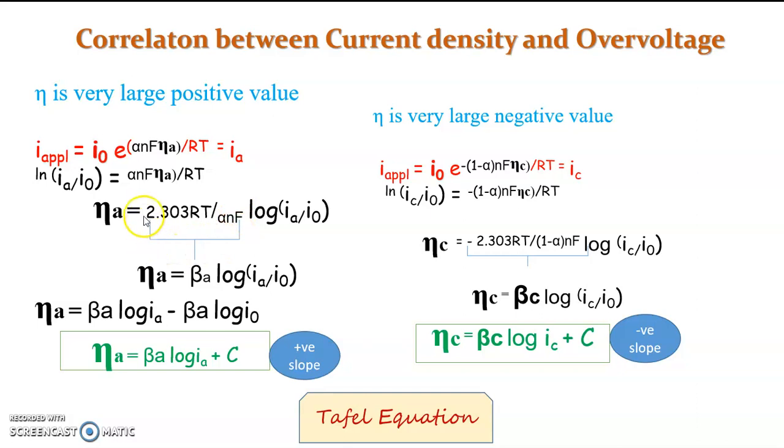And from this, ηA can be written as 2.303 RT by alpha NF log Ia by I0. And I am putting this constant as βA which is a constant, where then ηA becomes βA log Ia by I0. And it can be written this way. And you can have from this equation that βA is a constant, I0 also at the equilibrium value is a constant. So this can be changed to a constant value. So the equation becomes ηA equal to βA log Ia plus C.